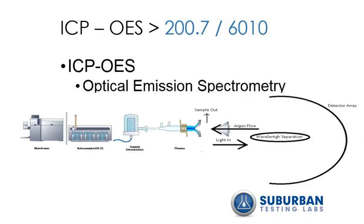OES stands for optical emission spectrometry. With an ICP-OES, the sample never actually enters the system — it is light emissions only. The ICP-OES analysis is a type of emission spectroscopy that uses inductively coupled plasma to produce excited atoms and ions that emit electromagnetic radiation at wavelength characteristics of a particular element. It is a flame technique with a flame temperature in the range of 6,000 to 10,000 K. The intensity of this emission is indicative of the concentration of the element within the sample.